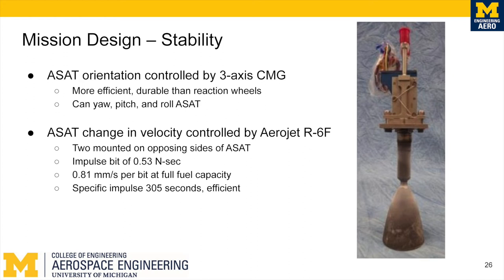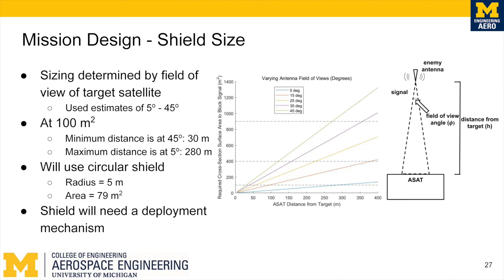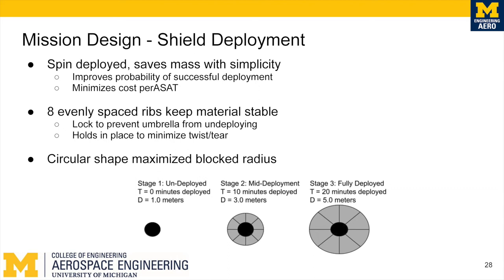Now for the blocking shield — we characterized its size by estimating a target satellite to have a 5 to 45 degree field of view, giving us a 30 to 280 meter range. We ended up settling on a radius of five meters with an area of 79 square meters to fit cost and mass restraints. In order to fit in our launch vehicles, the shield needs to be deployed in space, so we went with the spin deployment method. Due to its simplicity it will minimize cost per ASAT. We will have eight evenly spaced ribs which lock in place to prevent any twisting, tearing, or undeploying. We chose a circular shape to maximize the blocked radius, and the shield will deploy at a rate of about a quarter of a meter every minute to minimize tearing.